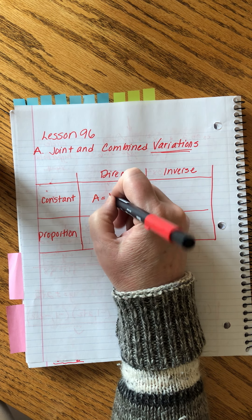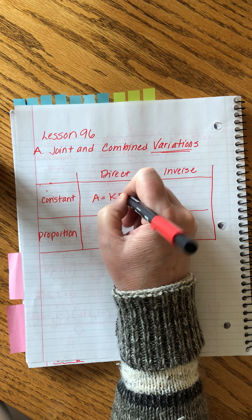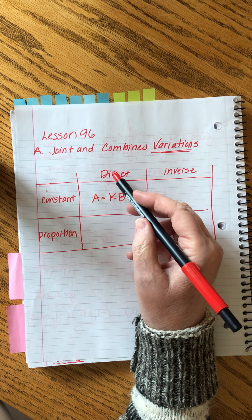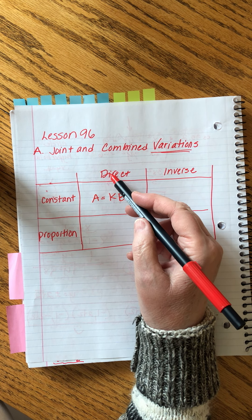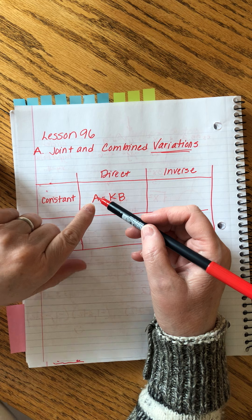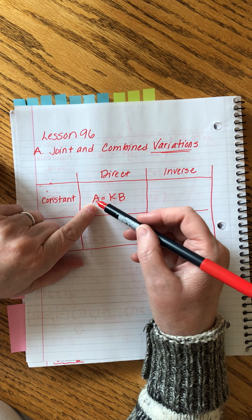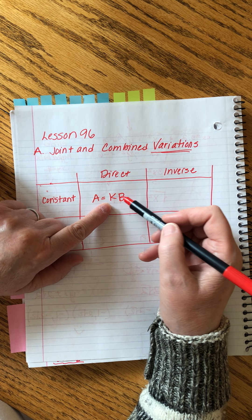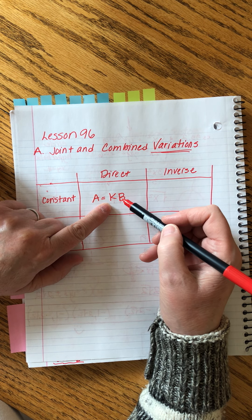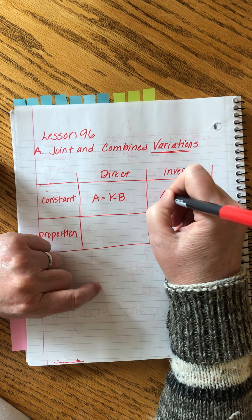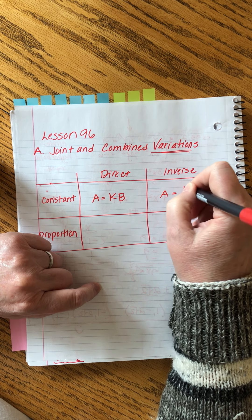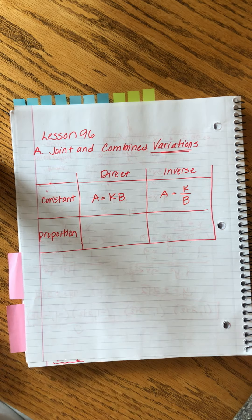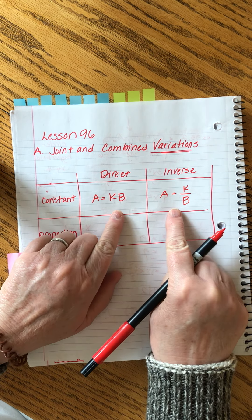Saxon Algebra 2, Lesson 96. It's our last lesson before spring break — we're almost to 100! This is a two-parter, and the first topic has lots of nice algebra but also words.